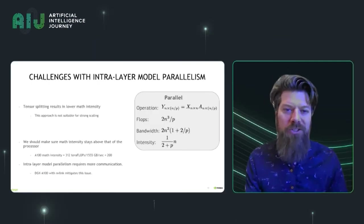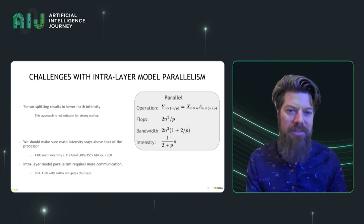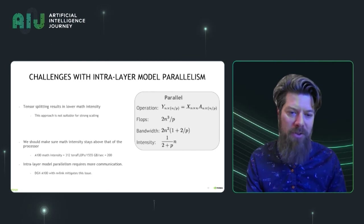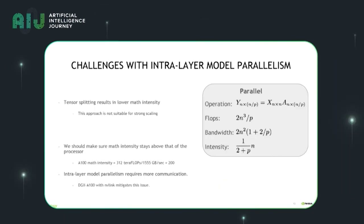What are the challenges with splitting up layers across multiple devices? One of the biggest challenges is that as you split the computation, you have lower math intensity. That means that at some point you become bandwidth bound if you continue to make the slices of the model on each device smaller. In terms of the A100 GPU, which has 312 teraflops but 1.5 terabytes per second memory bandwidth, the arithmetic intensity is about 200. So when we're splitting the model, we keep that in mind and don't split it too small, because if we did, the arithmetic intensity would be too low and we wouldn't see good scaling.